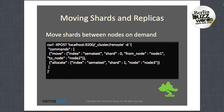You can also move shards and replicas around the cluster on demand. For example, to move the index Sematext, shard 0, from node 1 to node 2, you can do that with the following command. You can also force index allocation if you've cancelled the allocation and want to allocate it in the future using the allocate command.